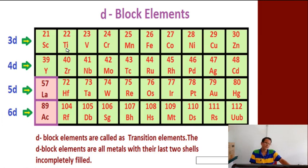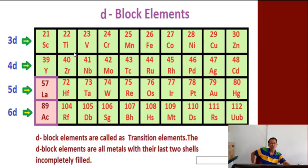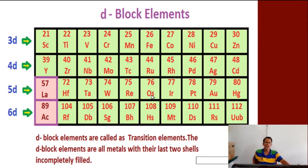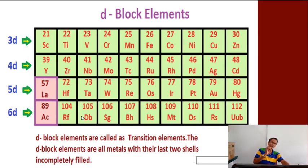D-block elements span group 3 to group 12. The D-block is divided into four series: 3D series, 4D series, 5D series, and 6D series. All are called transition elements or D-block elements because the last electron of these elements enters into the D sub-shell, not the S or P sub-shells.